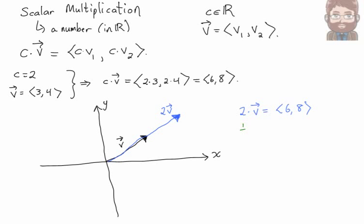What if I take a vector V and I multiply it by 1 half? Well, 1 half times 3 and 1 half times 4, which is 1.5, 2. If you graph it in standard position again, you'll notice that 1 half times V again points in the same direction as V, and it's half as long.